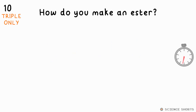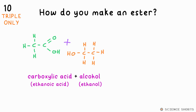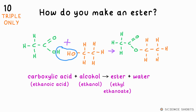How do you make an ester? You make an ester by reacting a carboxylic acid and an alcohol. For example, ethanol and ethanoic acid makes ethyl ethanoate. An H and OH are kicked out, so water is also produced from the reaction.